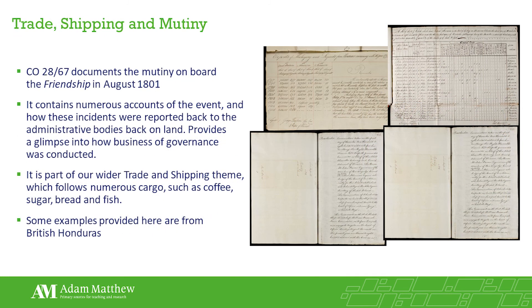I'm now going to take you through a document for Barbados: CO2867, which describes the mutiny on board the boat Friendship in August 1801. It describes the reaction of the boatswain and crew member when they were shaken awake and told the people on deck were killing each other with muskets. As the boatswain went to investigate, he discovered the first and third mates being held hostage in the cabin by four men with pistols.